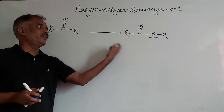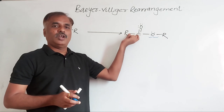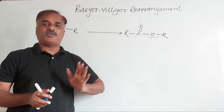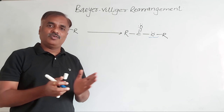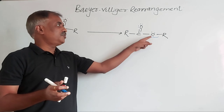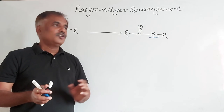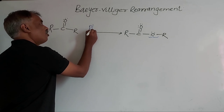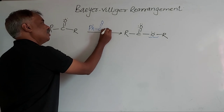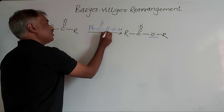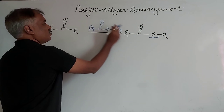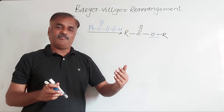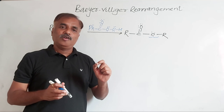Here ketone has been converted into ester by insertion of oxygen in between carbonyl group and alkyl group. When both alkyl groups are symmetrical, it is very easy to write the product — take any alkyl group because both are identical, and insert one oxygen in between carbonyl group and alkyl group to get the ester. This rearrangement takes place in the presence of per-benzoic acid or per-acetic acid. The per-acid is the source of the inserted oxygen — it is the oxidizing agent.